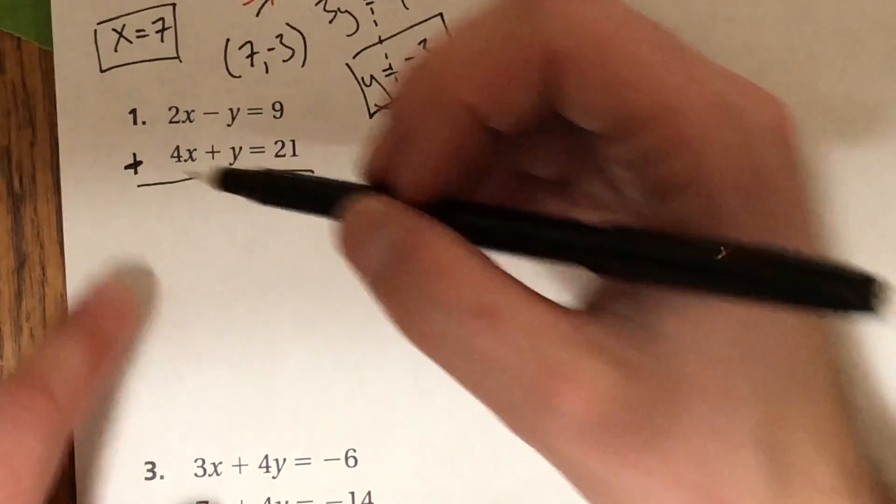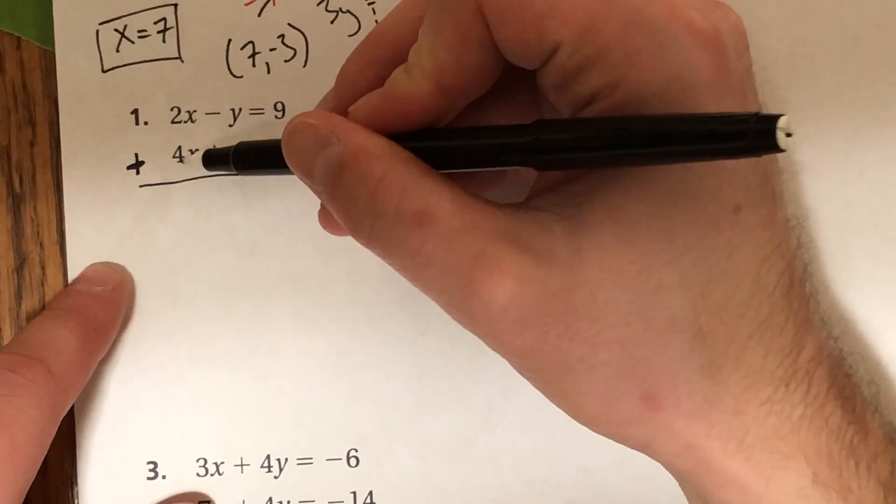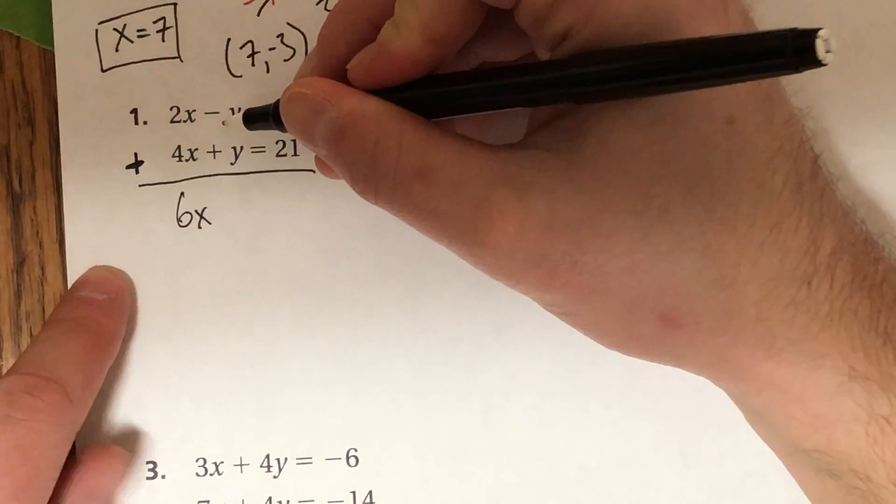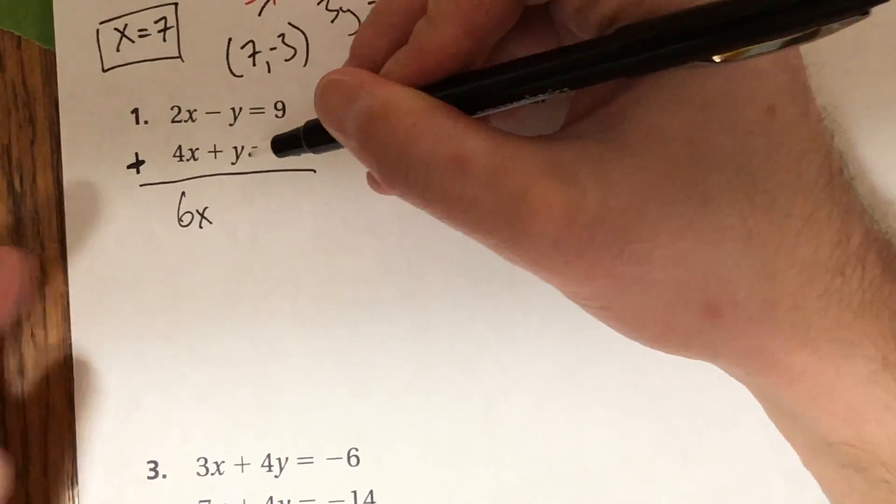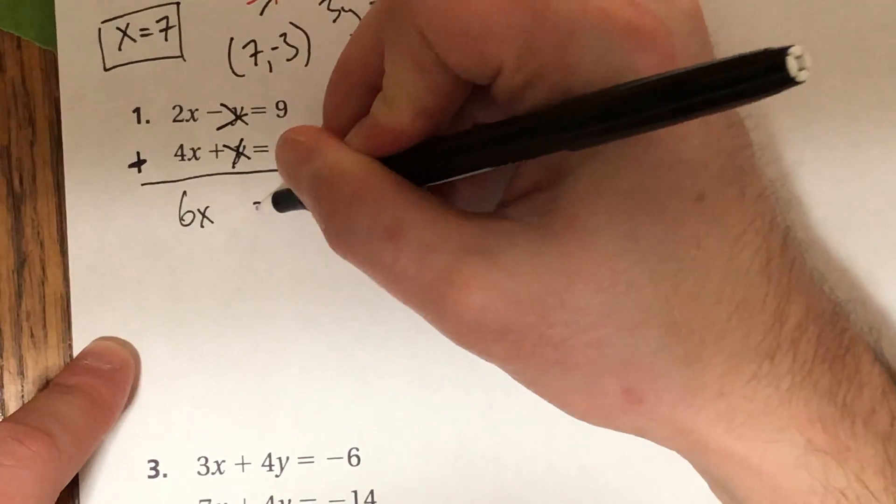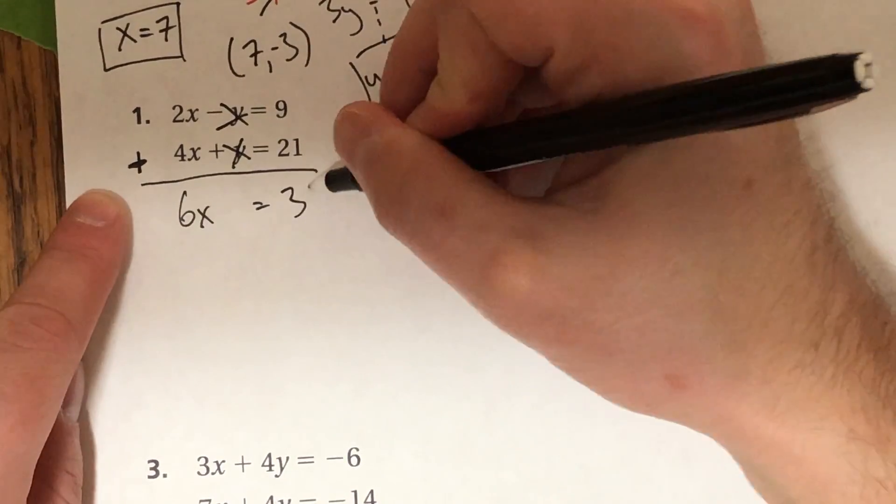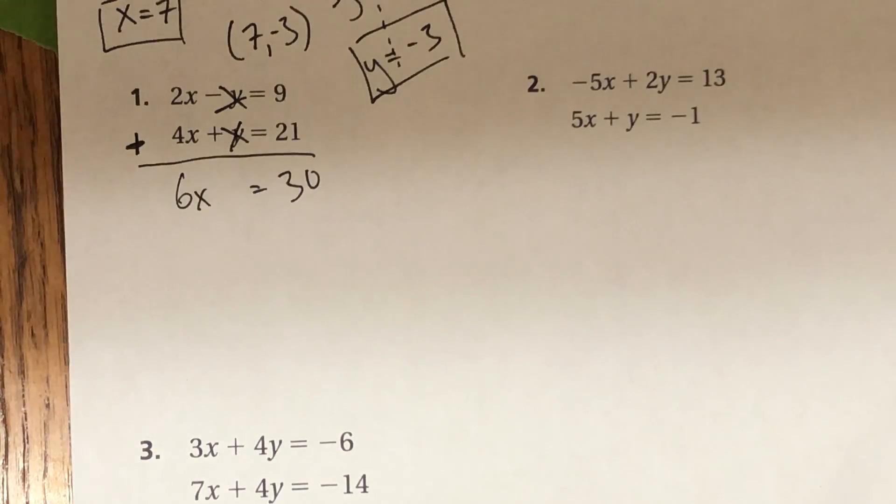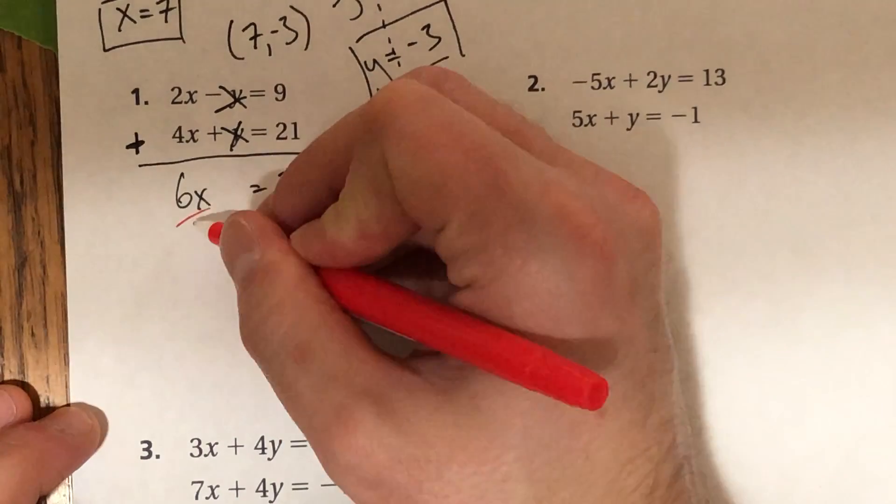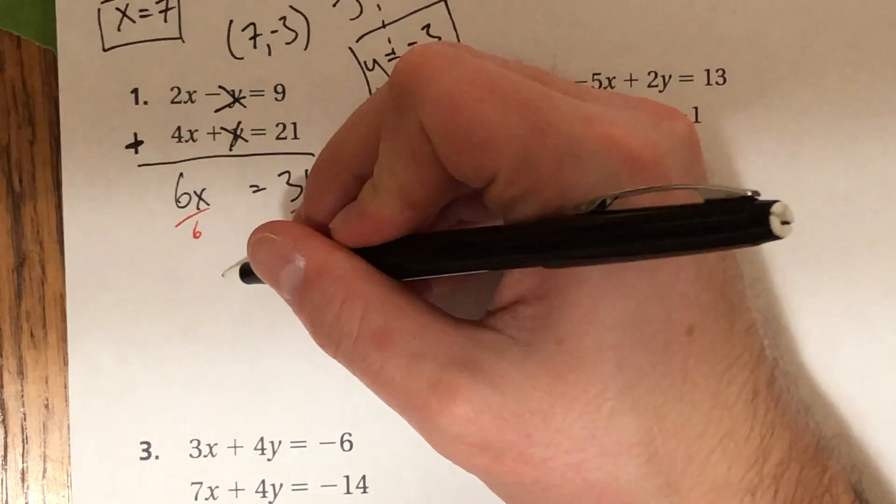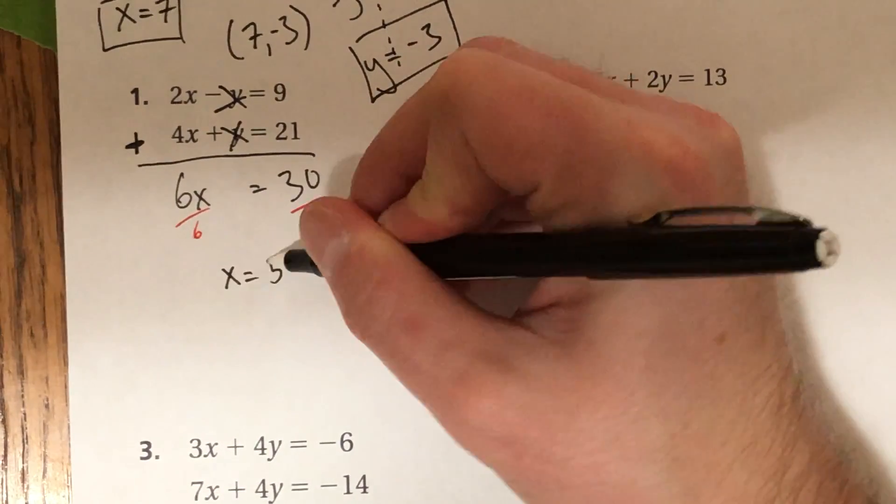So let's go ahead and add these up then. 2x plus 4x is 6x. Negative y plus y is 0. They eliminate, so I'm going to cancel them out. And 9 plus 21 is 30. Now I just want to get x by itself. Divide both sides by a 6.